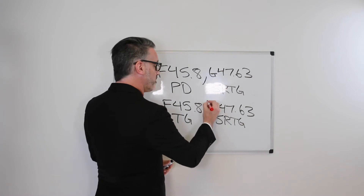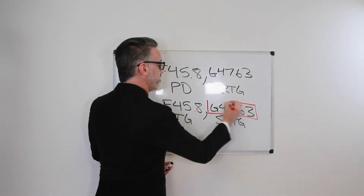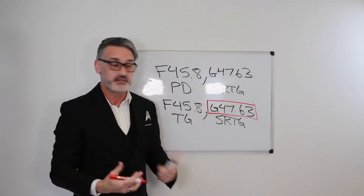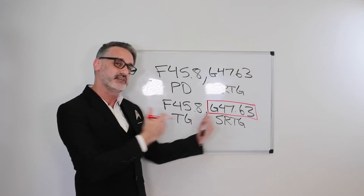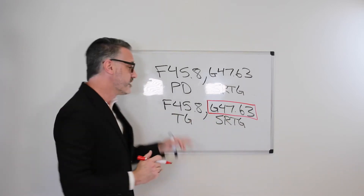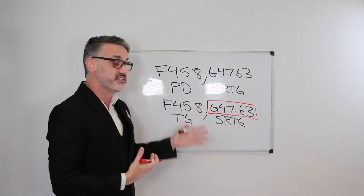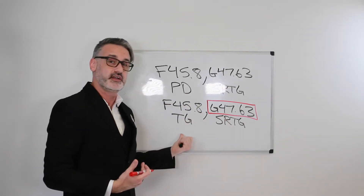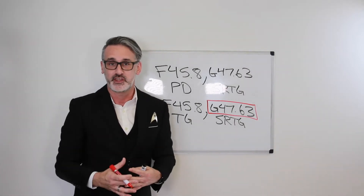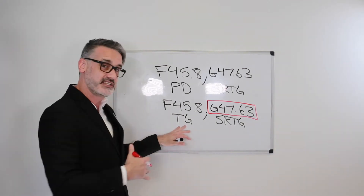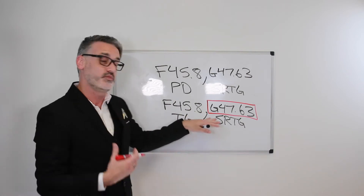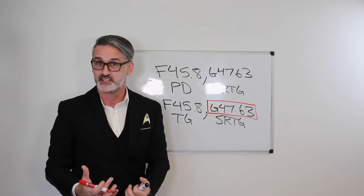In this case, we would only code G47.63. If the patient has teeth grinding, and more descriptively that is sleep-related teeth grinding, we code the most specific ICD-10 code for the condition. So if a patient has teeth grinding and that teeth grinding just happens to be sleep-related teeth grinding, Excludes 1 would apply — we would only code G47.63.